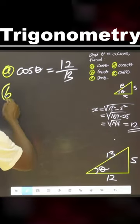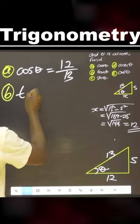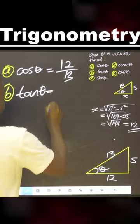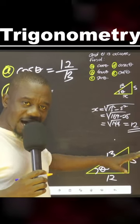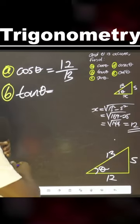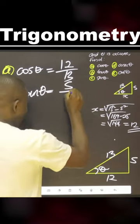Then B, tan theta. Tan theta is opposite over adjacent, that is 5 over 12.